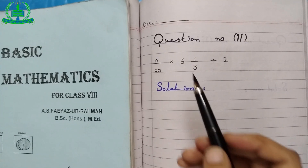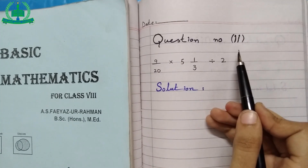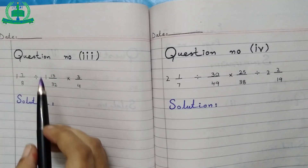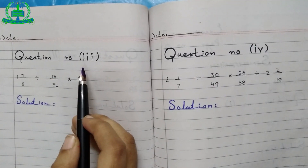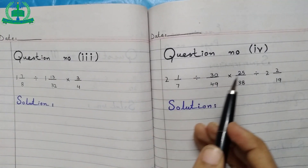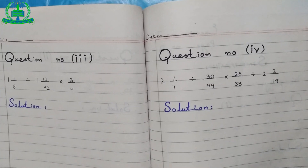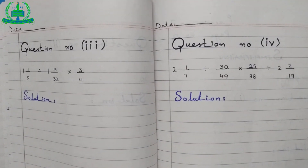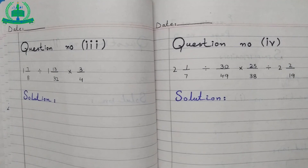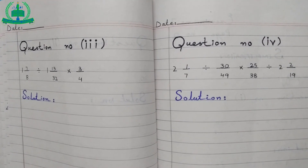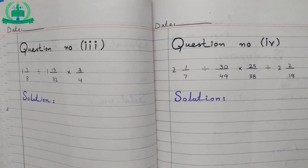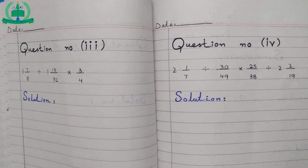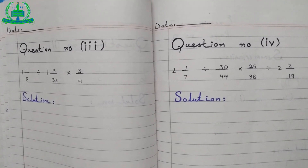Do question number 2, question number 3, and question number 4 by yourself. This is the end of today's lecture. Do this work in your math register and submit it on time. Allah Hafiz.